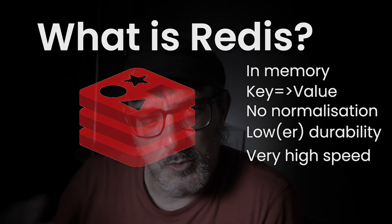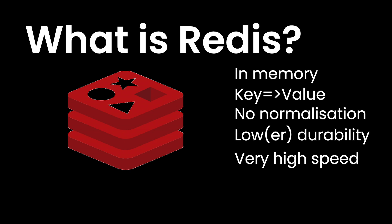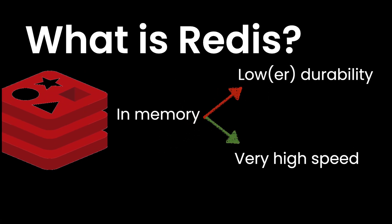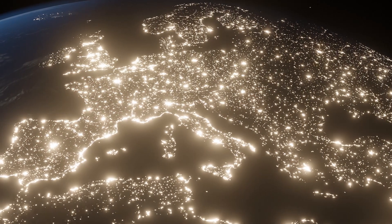Why is durability sacrificed? Because data is stored in memory, there are cases where data can be lost — for example, if power is cut and Redis is configured only to use memory. It's worth mentioning that there are use cases where this is perfectly fine, such as using Redis as a cache. And even if Redis is configured to write to disk, you could lose a minute or so of data.